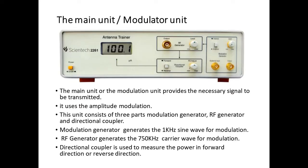The main unit generates the necessary signal to study the antenna radiation pattern. It uses amplitude modulation technique. This unit consists of three main parts: modulation generator, RF generator, and a directional coupler. Modulation generator generates the 1 kilohertz sine wave for the modulation. RF generator generates the 750 kilohertz carrier wave for the modulation. Directional coupler is used to measure the power in a forward direction or the reverse direction.